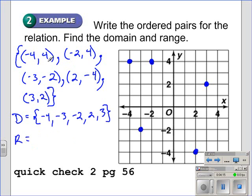The range, or the y-values, we have a four, a four, a negative two, negative four, and a positive two. The smallest of those values is negative four, then negative two, positive two, and four.